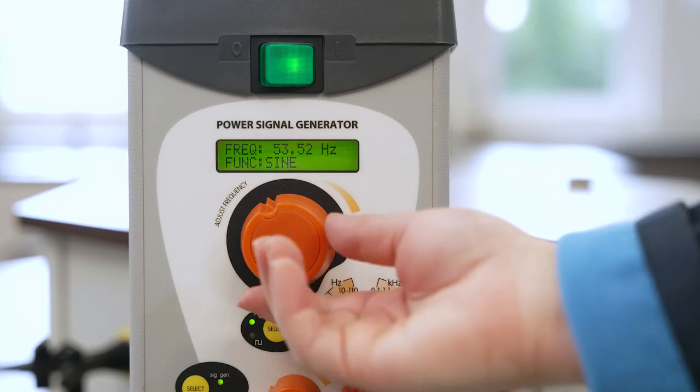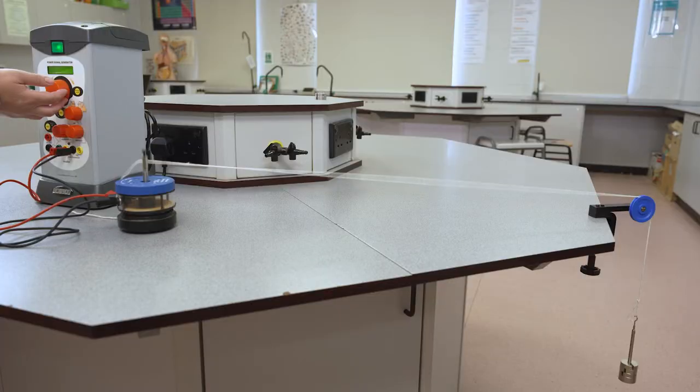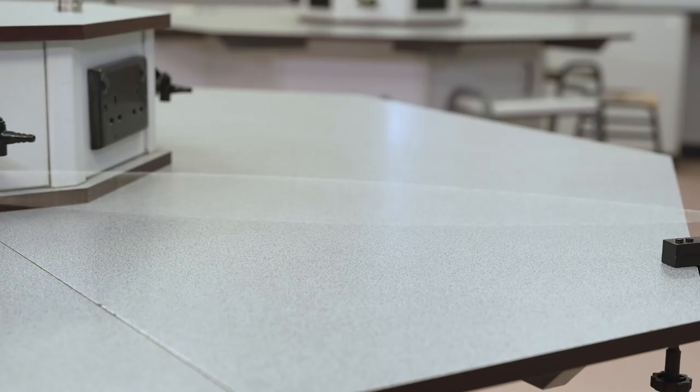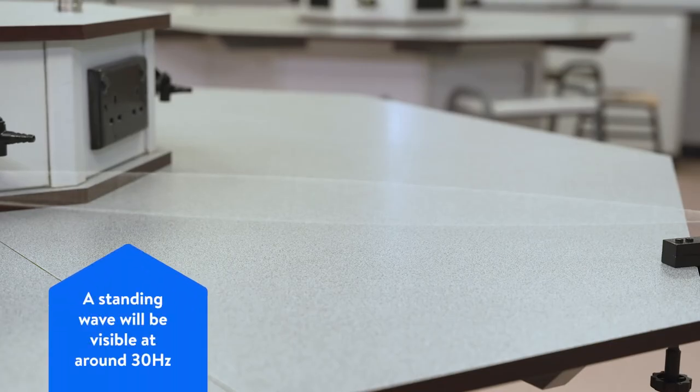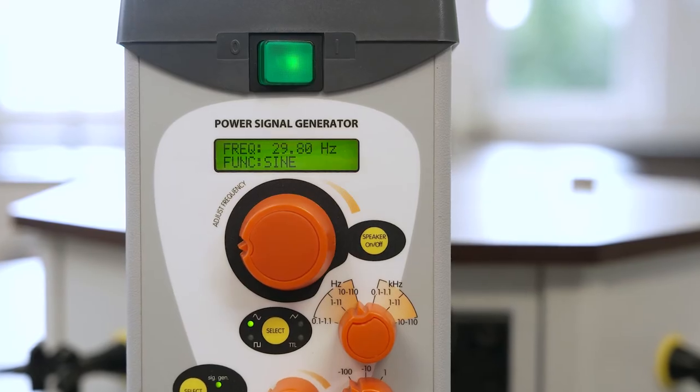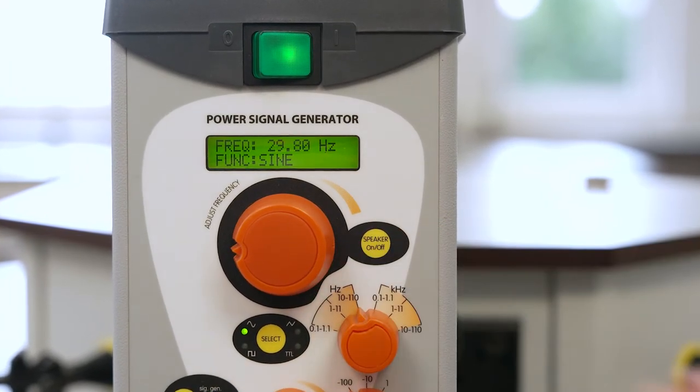Adjust the large frequency dial until you see a standing wave appear. For the experiment setup we are using, it will be around 30 Hz. You may need to adjust the amplitude to see a clear wave pattern.